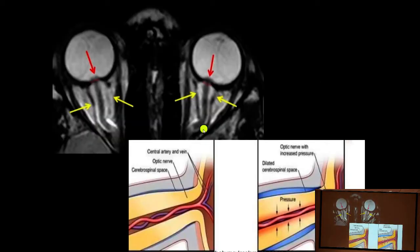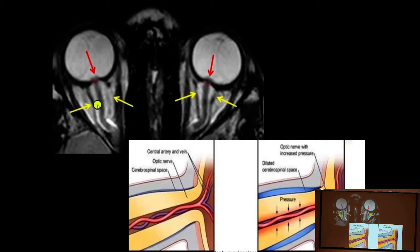Here's what increased ICP looks like: normally the subarachnoid space is very thin, but increased pressure pushes it forward right up to the optic nerve head. We can actually visualize this on MRI — on thin-section orbital MRI, you can see the optic nerve and the enlarged black space around it representing the subarachnoid space. This indicates increased pressure moving forward against the optic nerve, visible on both sides.